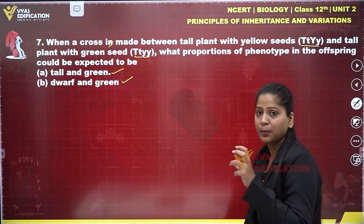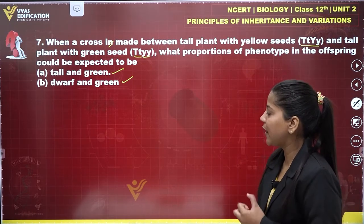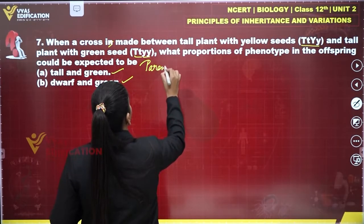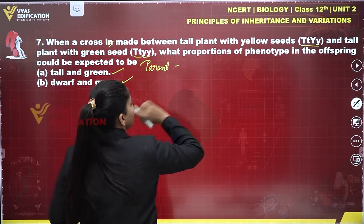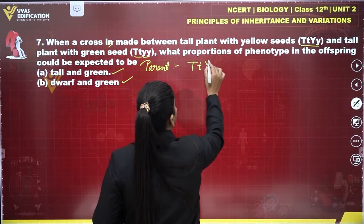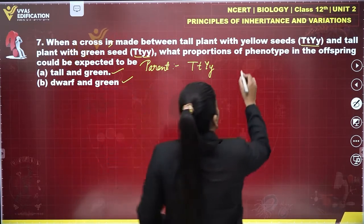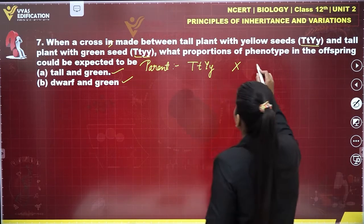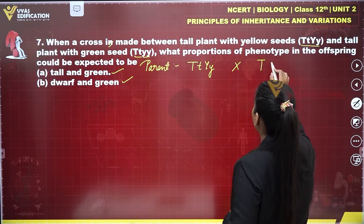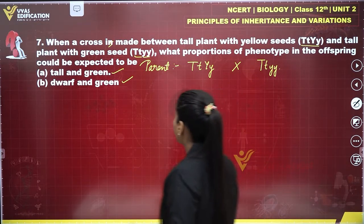To examine what proportion of the phenotype is tall and green, and dwarf and green, we have to make a cross. First, we will select the parents already provided. The first parent is TtYy — a tall plant with yellow seeds — being crossed with another parent, a tall plant with green seed, which is TtYy (Ttyy).